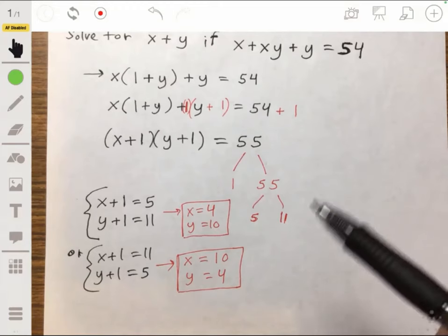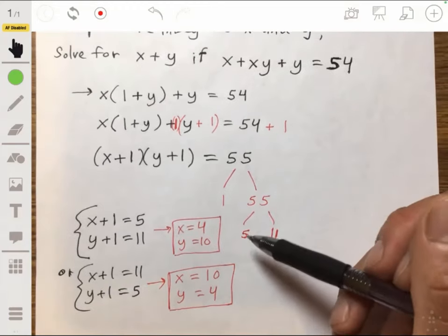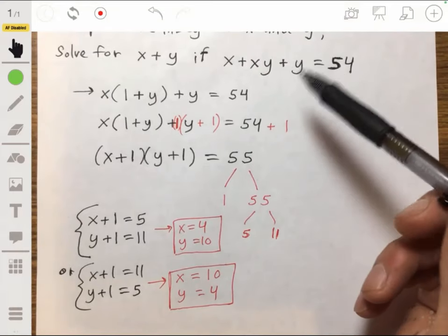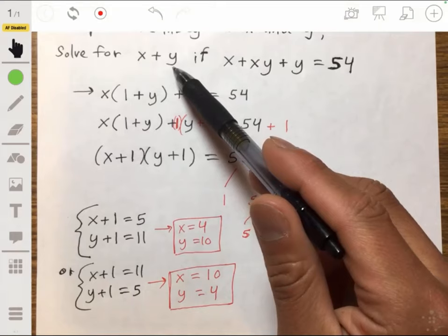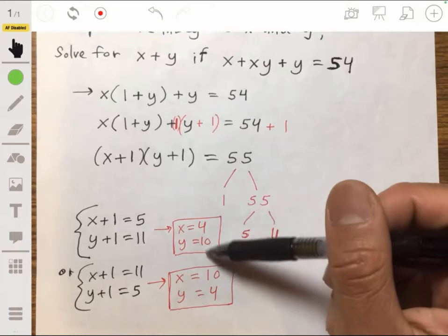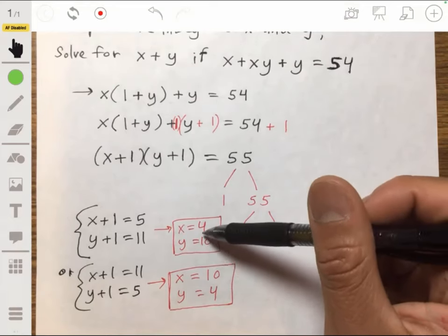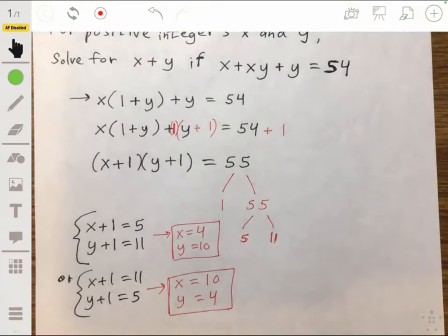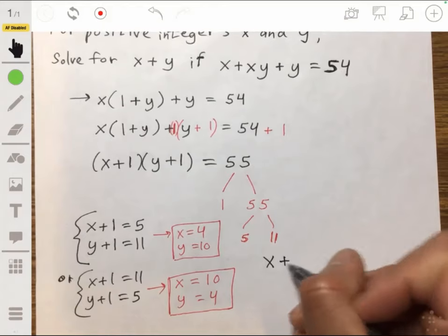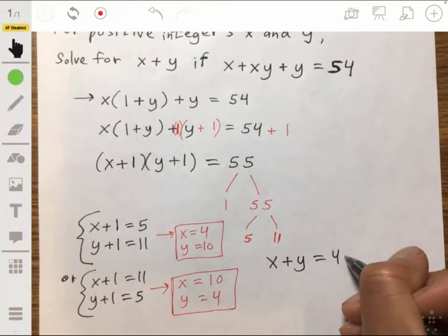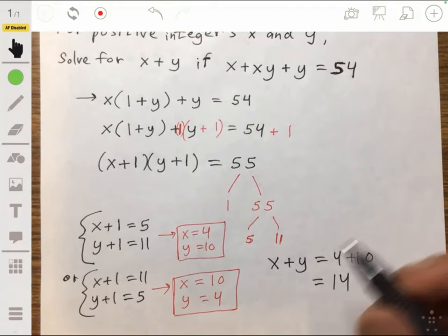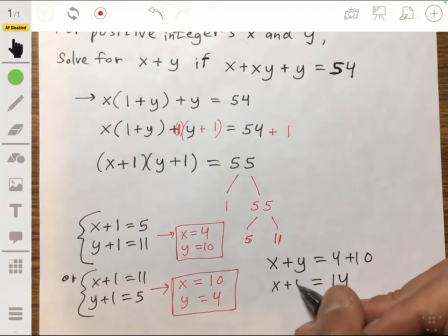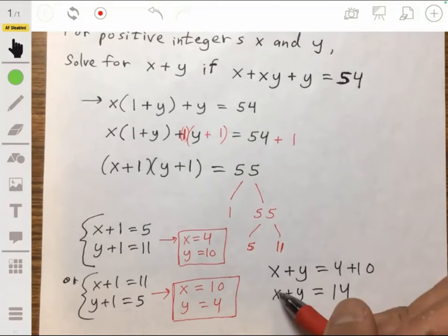But it actually doesn't matter because, remember that since we're looking for x plus y, it doesn't matter which solution you have because 4 plus 10 gives the same result in both cases. So we have x plus y is 4 plus 10, which is then equal to 14. And that's your answer.